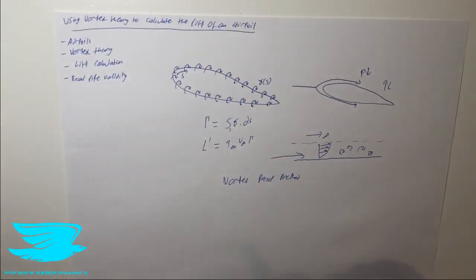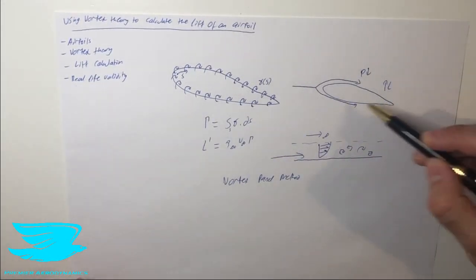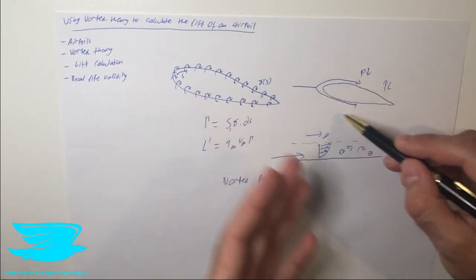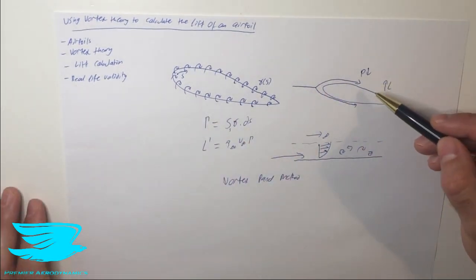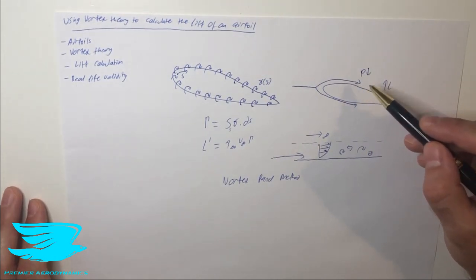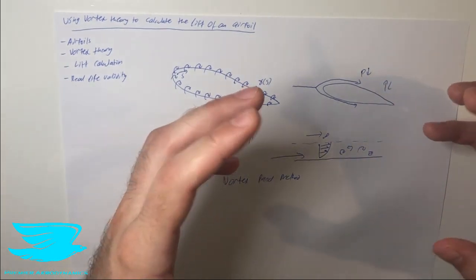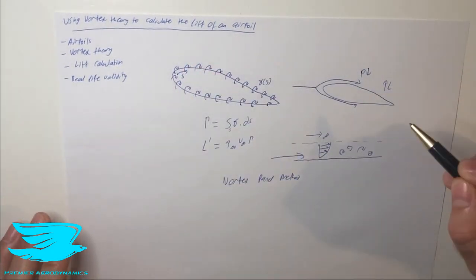So airfoils in general we have a flow coming over it. It goes over the top and the bottom. Now the pressure usually drops on both surfaces but the top surface it usually drops a lot more which results in a net pressure difference being negative which then results in the lift being produced.